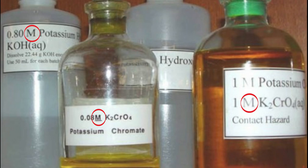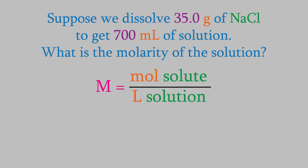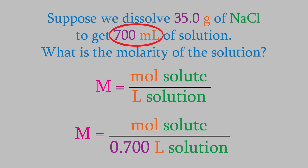That way, we'll have something to compare to when we look at the other kinds of units. Suppose we dissolve 35.0 grams of sodium chloride in water until we have 700 milliliters of solution total. What's the molarity of the solution? The molarity is the moles of solute over the liters of solution. The liters of solution is easy — we have 700 milliliters, so that's 0.700 liters.